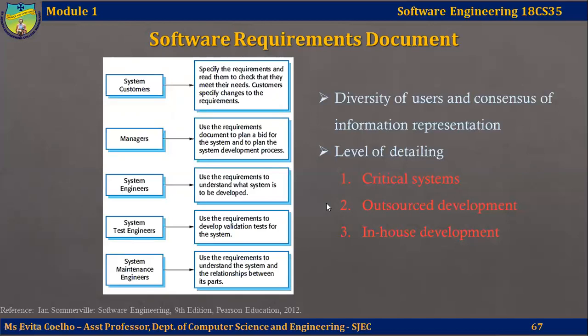Looking at the tabular format, you can see the variety of users. System customers specify the requirements initially and read the SRS to check if it is exactly what they wanted; they may also specify changes. Managers use the requirements document to plan a bid for the system and plan the entire development process. System engineers use the SRS to understand what features have to be developed and delivered. Test engineers use the SRS to develop validation tests to check if the actual requirements are delivered in the system increments. Maintenance engineers use the SRS to understand the system and the relationships between the different modules.